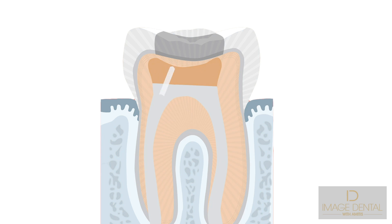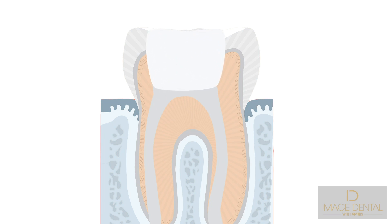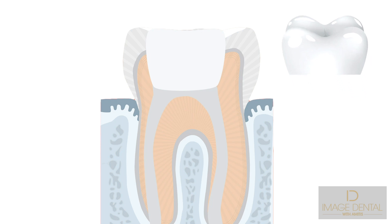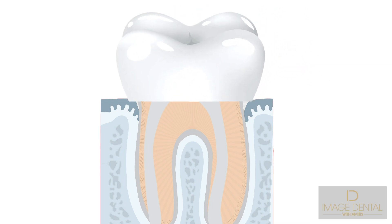Sometimes one or more posts may be placed to strengthen the tooth and help retain the final filling, and the tooth is then restored with a permanent filling material. The root canal tooth is weak and at risk of fracture, so it is advisable to have a crown or a large filling to cover the surface of the tooth, called an onlay.